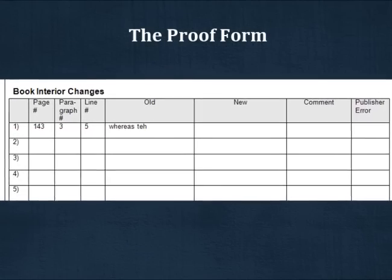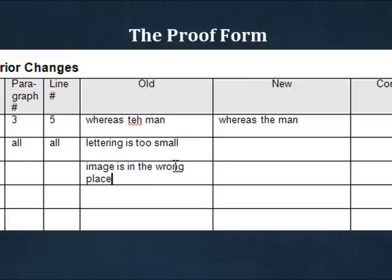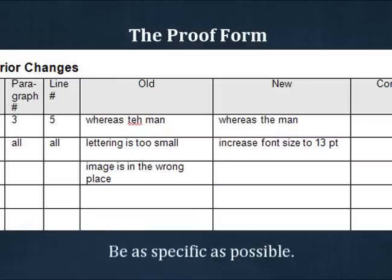In the next two columns, old and new, you'll enter the way the error appears now and how it should appear when corrected. If the error is a one-word change, we ask that you please include the words before and after the error to help us locate it more quickly. If the correction is a design or layout change, use the old column to describe what you do not like about the current design or layout — for example, lettering is too small or image is in the wrong place. Then, in the new column, describe how you would like the design or layout to be changed. When making design and layout changes, be as specific as possible about how you would like things changed.